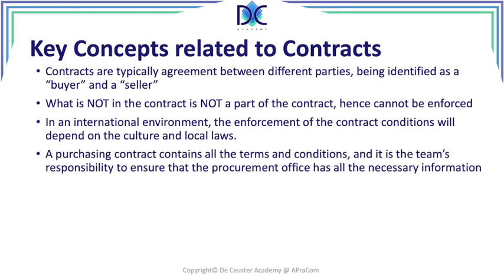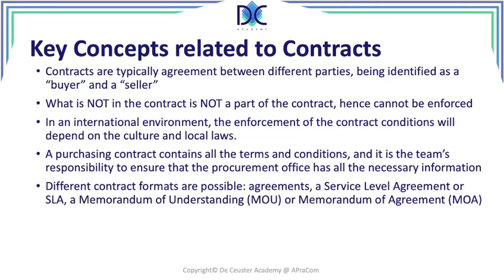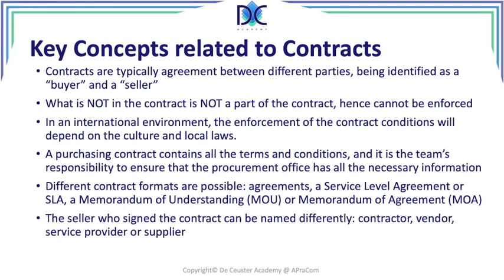The purchasing contract contains all the terms and conditions, and it's the team's responsibility to ensure that the procurement office has all the necessary information. There may be different contract formats that are possible: there may be an agreement, a service level agreement or SLA, a memorandum of understanding (MOU), or a memorandum of agreement. Each of them has its own specific application.